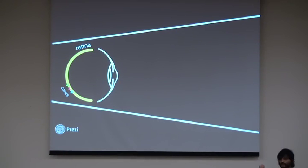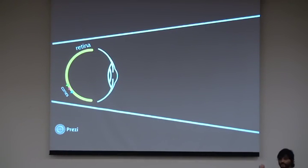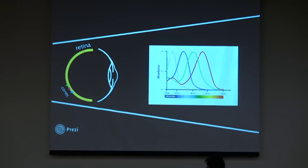We perceive color thanks to cells located behind our eyes, specifically in the retina, which are called cones. There's another type of cell called rods, but cones are sensitive to three areas of the light spectrum.